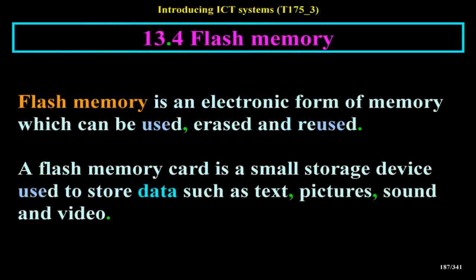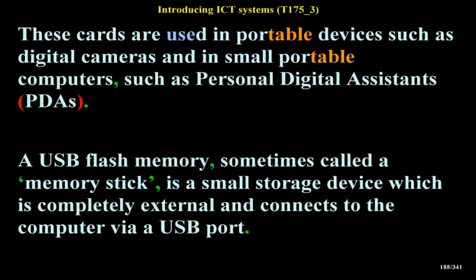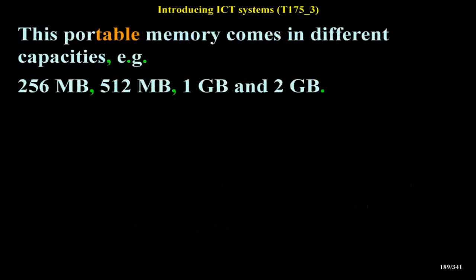Flash memory is an electronic form of memory which can be used, erased and reused. A flash memory card is a small storage device used to store data such as text, pictures, sound and video. These cards are used in portable devices such as digital cameras and personal digital assistants (PDAs). A USB flash memory, sometimes called a memory stick, is a small storage device which is completely external and connects to the computer via a USB port. This portable memory comes in different capacities, e.g. 256 MB, 512 MB, 1 GB and 2 GB.